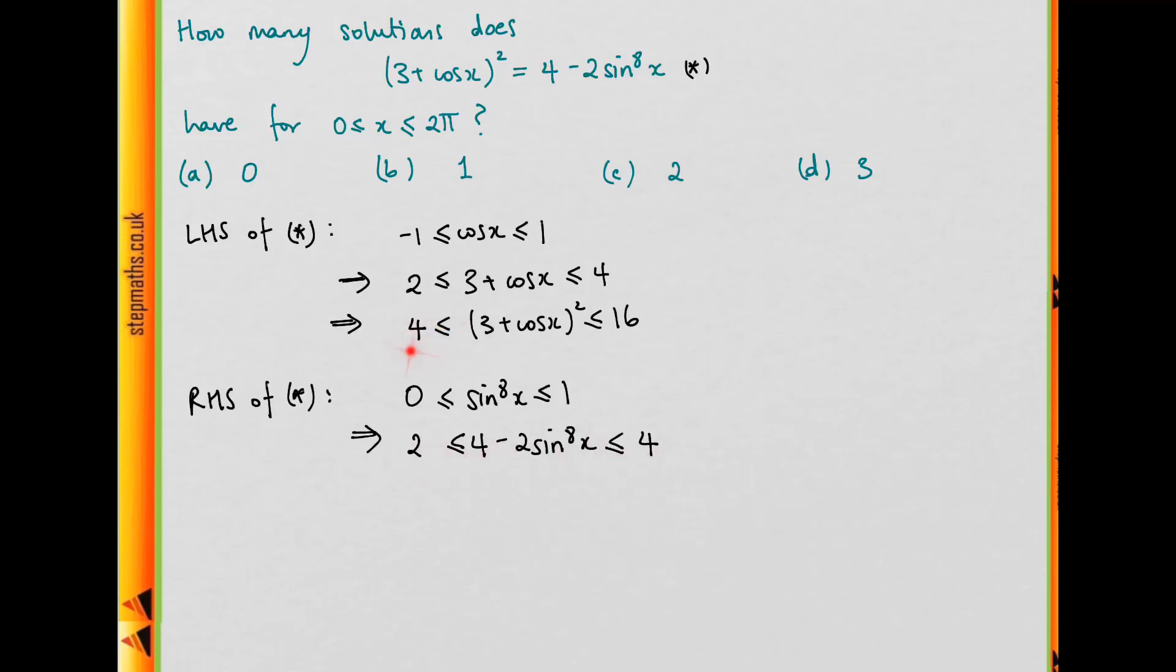We see that the left-hand side is always greater than or equal to 4, and the right-hand side is always less than or equal to 4. So we're only going to get these two being equal if they're both 4.